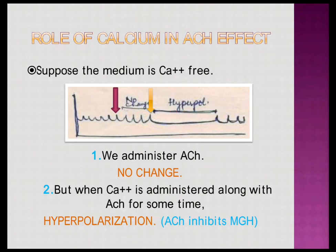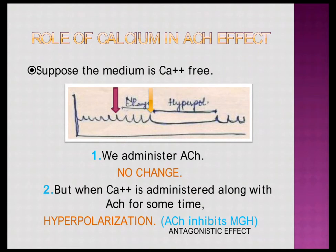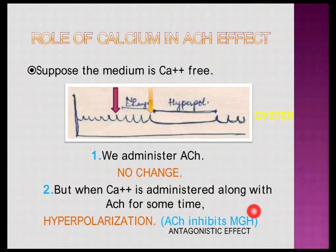The hyperpolarization curve shows that the nervous tissue is hyperpolarized. If it is hyperpolarized, it will not make the heart beat — this is inhibition of the heart. This is an antagonistic effect: ACh is excitatory for myogenic hearts, but here it is inhibiting the heart. This is the example of the oyster — a myogenic heart where ACh shows an antagonistic effect by hyperpolarization.